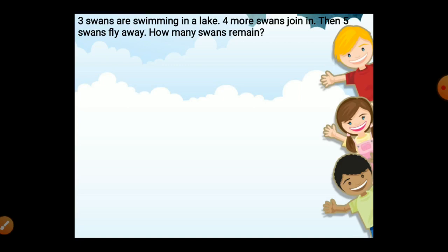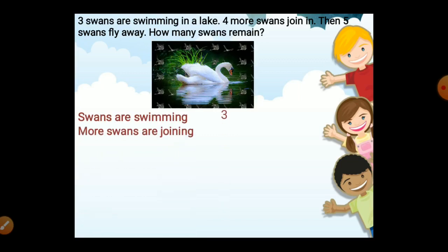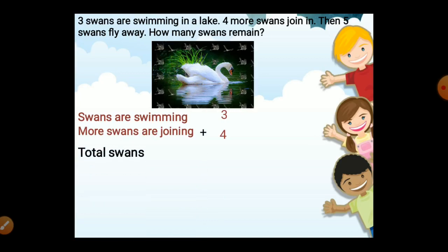Three swans are swimming in a lake. Four more swans joining — joining means you have to do an addition. Then five swans fly away. How many swans remain? First you have to do addition to find total swans. Three swans are swimming, four more swans are joining. Three plus four is seven.